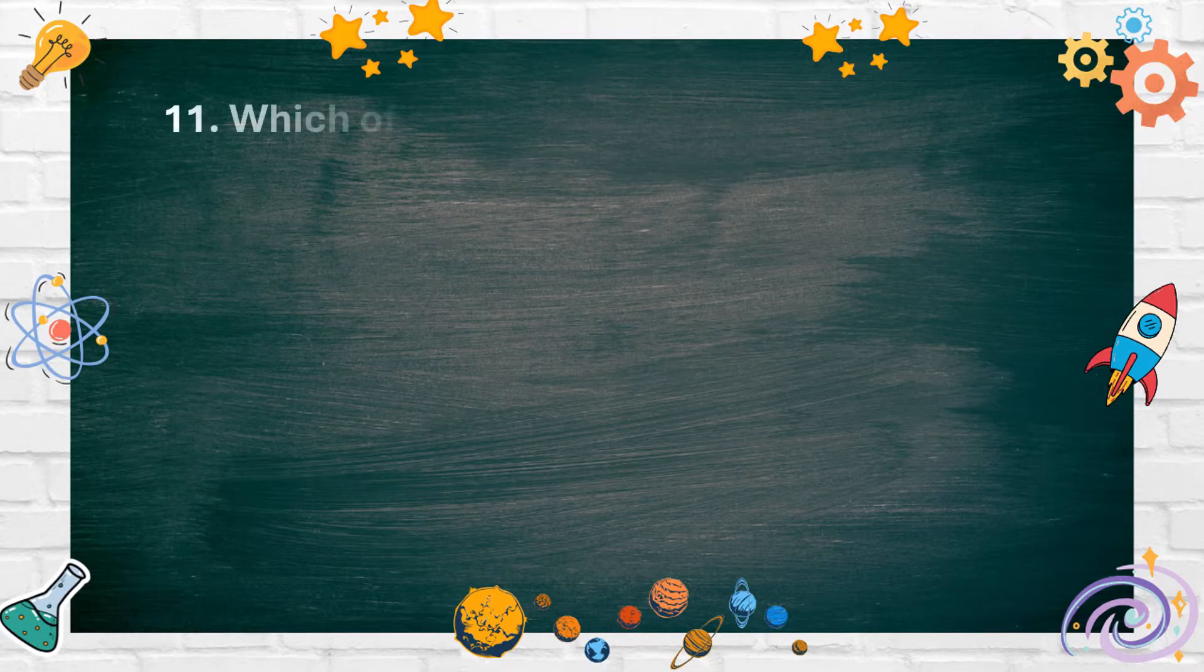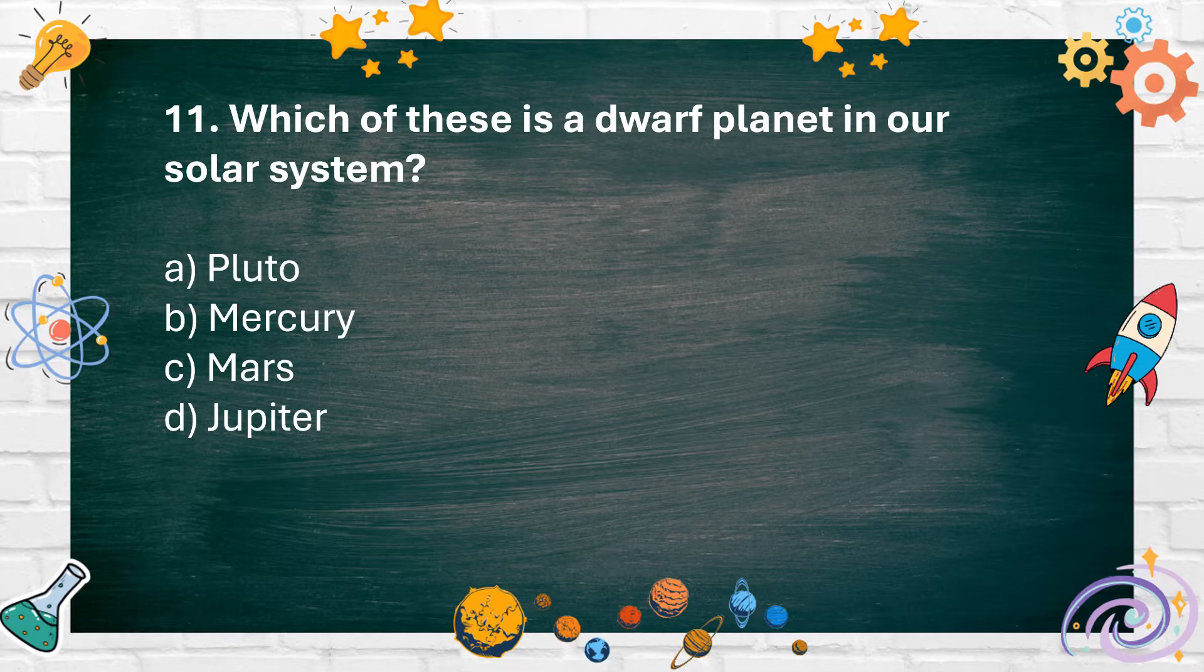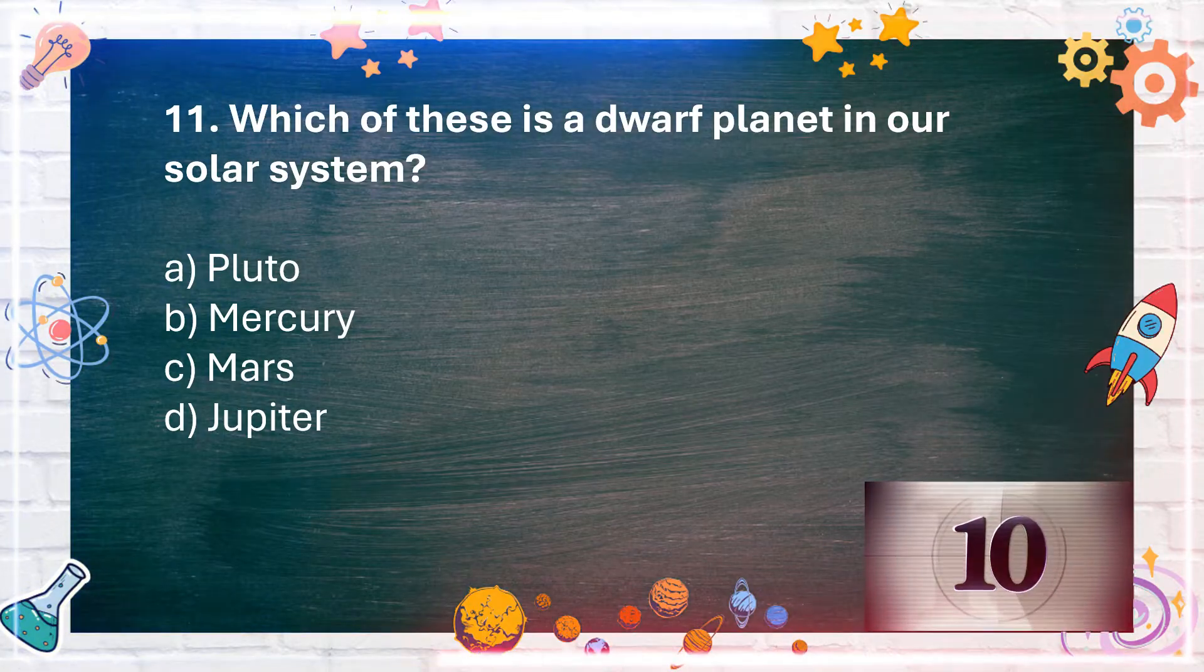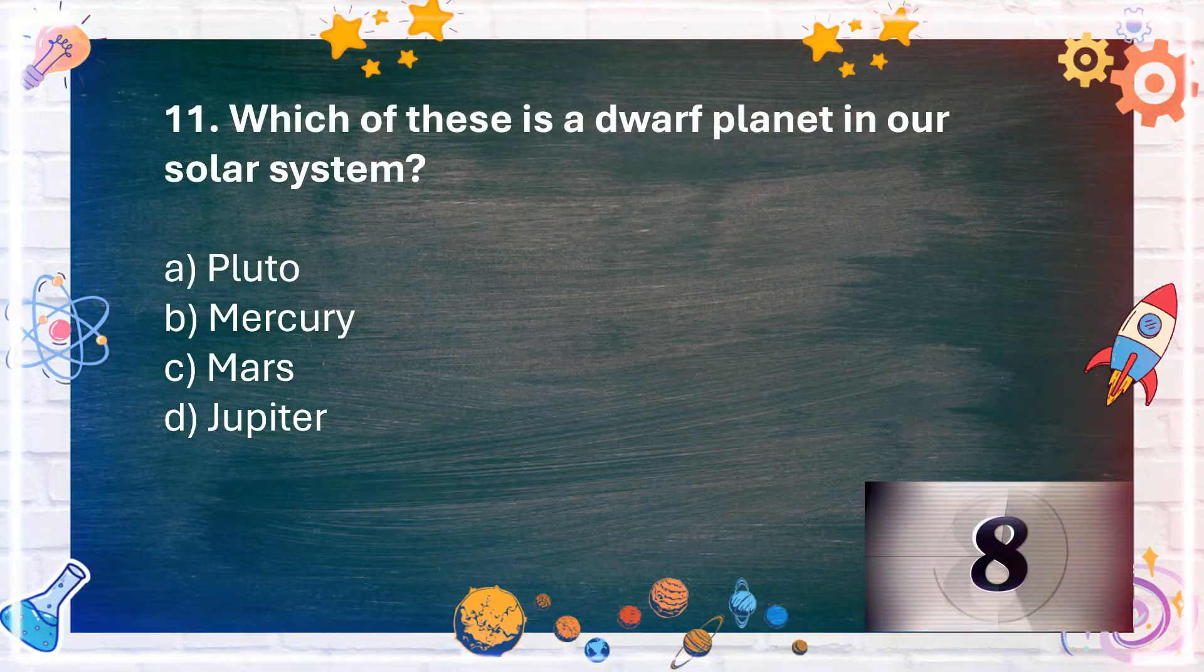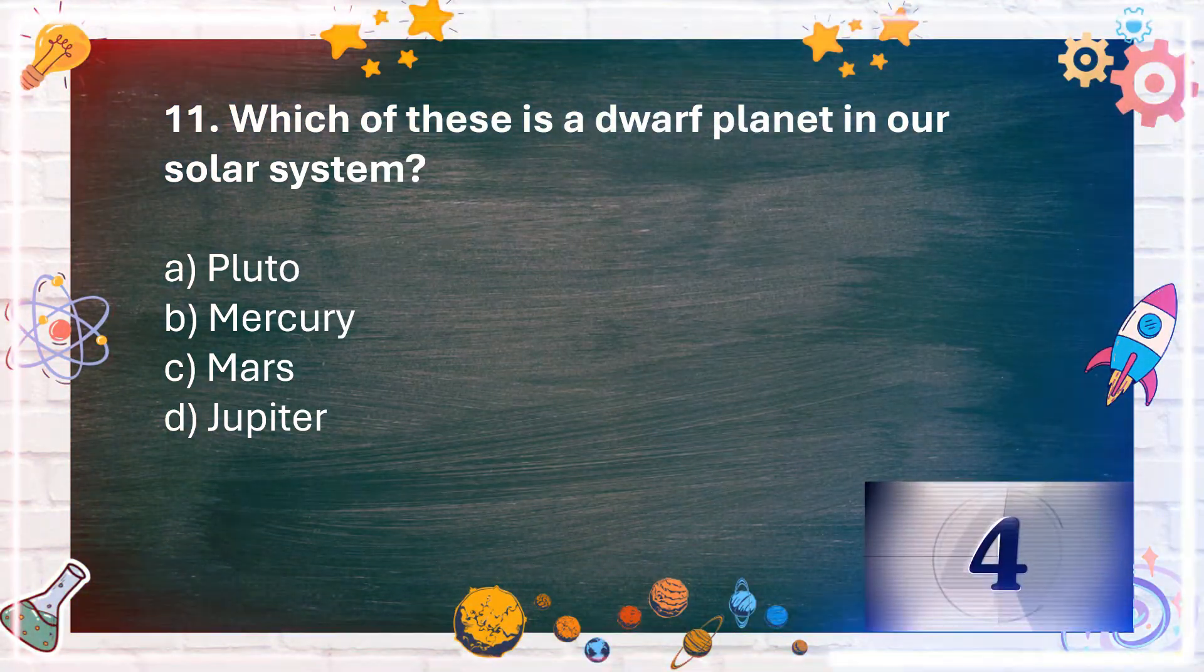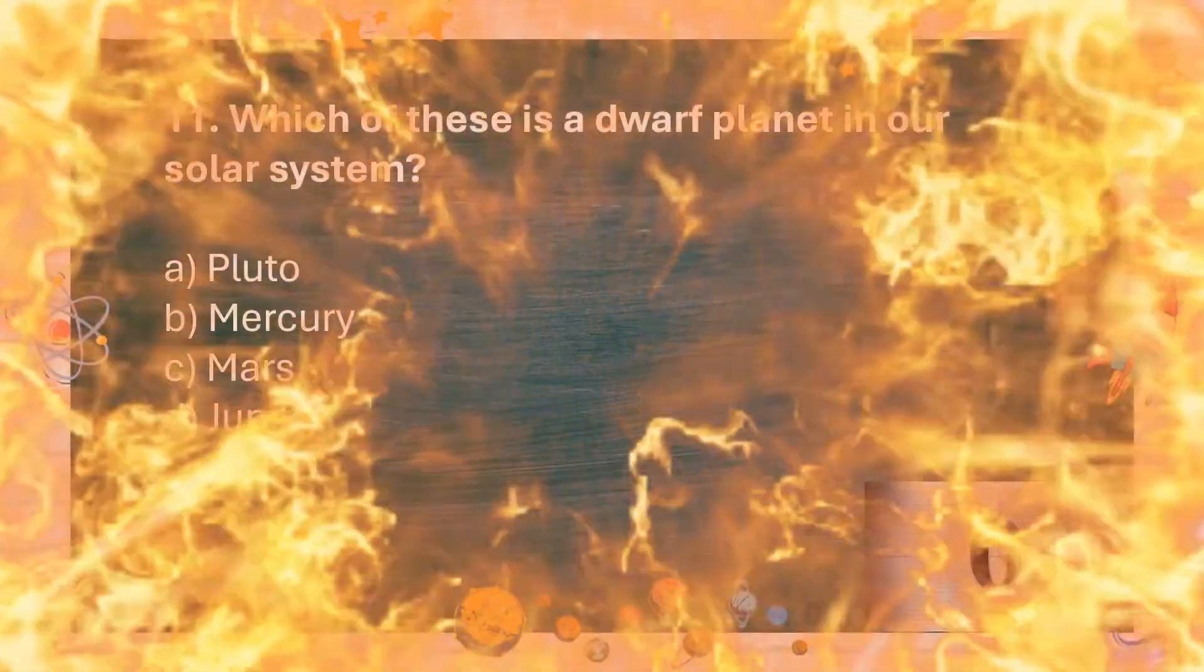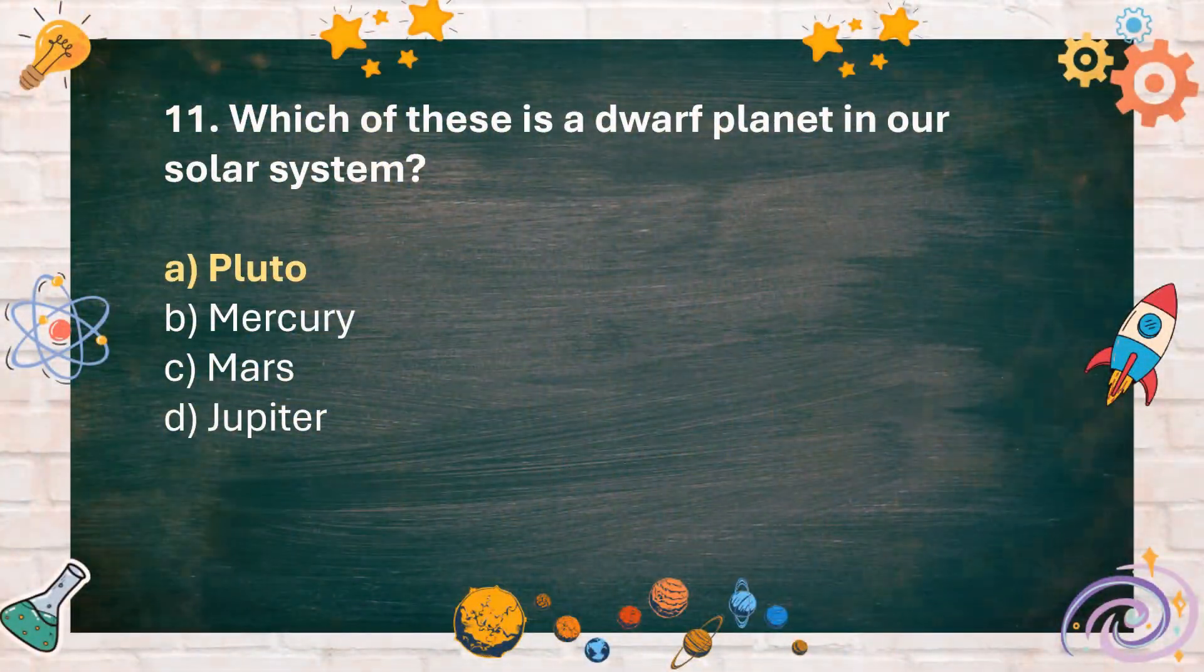Number 11: Which of these is a dwarf planet in our solar system? A. Pluto, B. Mercury, C. Mars, D. Jupiter. The answer is A. Pluto.